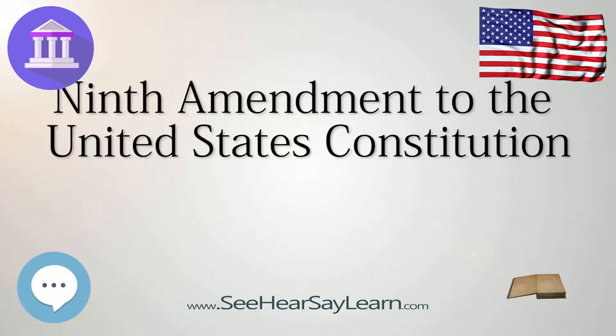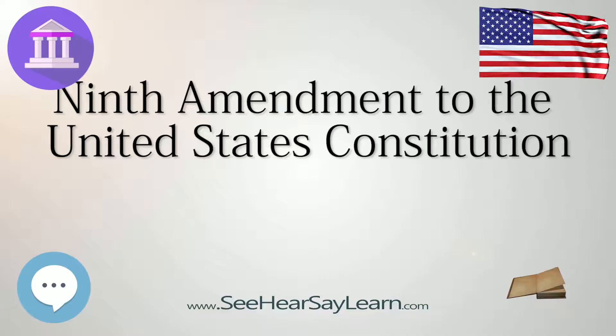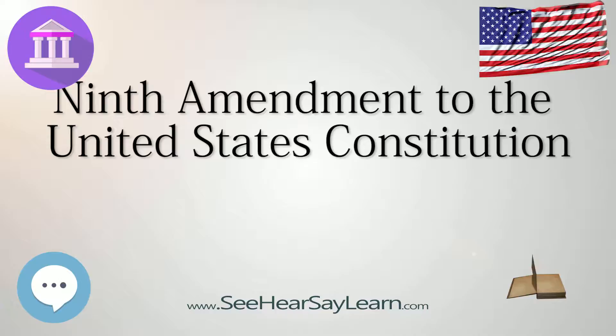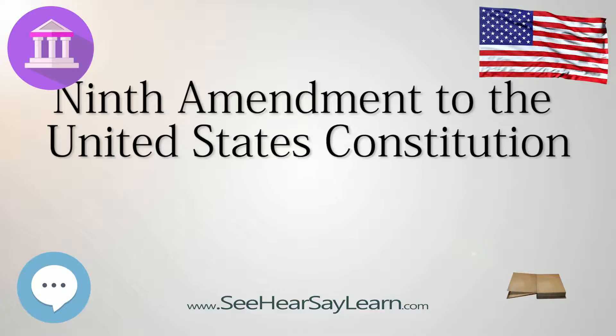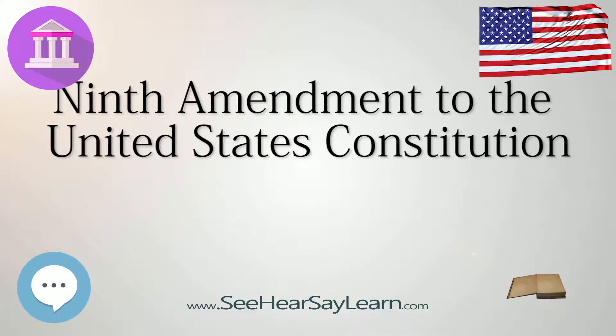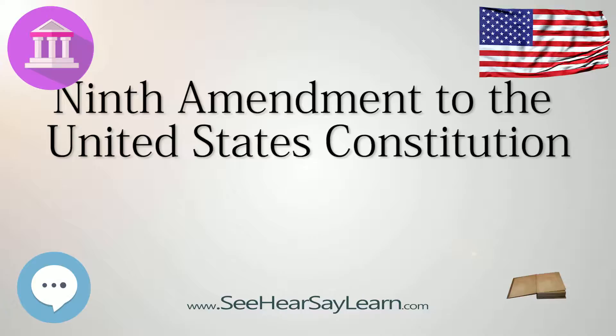The final text of the Ninth Amendment, like Madison's draft, speaks of other rights than those enumerated in the Constitution. The character of those other rights was indicated by Madison in his speech introducing the Bill of Rights. It has been said, by way of objection to a Bill of Rights, that in the federal government they are unnecessary, because the powers are enumerated, and it follows that all that are not granted by the Constitution are retained, that the Constitution is a Bill of Powers,